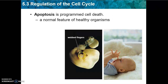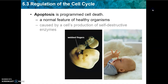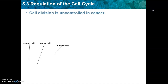As human beings are developing in the womb, they have webbed fingers. Apoptosis occurs before birth so that we no longer have webbed fingers. It's caused by a cell's production of self-destructive enzymes. It occurs in the development of infants in more places than just the webbed fingers.